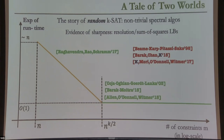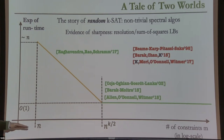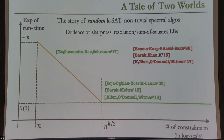Given such a model, if you have about some constant times N constraints — for K=3 it's about 4.5 — the formula is unsatisfiable with high probability. Our story makes sense once we are beyond this constant-times-N regime. There's a similar picture compared to the worst-case slide, except the transitions are leftward shifted. An exponential-time algorithm starts existing as soon as you have N^{1+epsilon} constraints for any fixed epsilon, and there's a polynomial-time algorithm once you have at least N^{K/2} constraints.